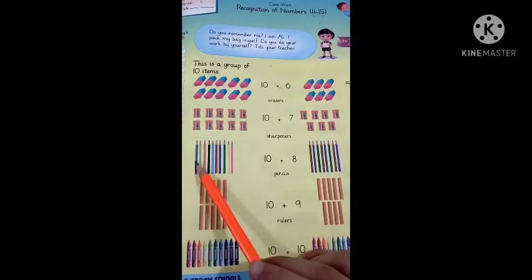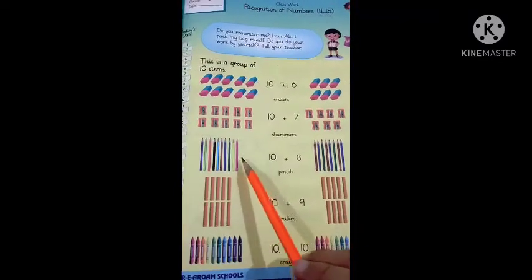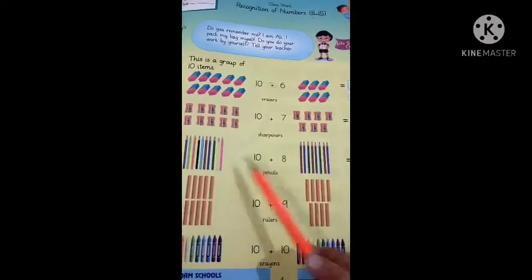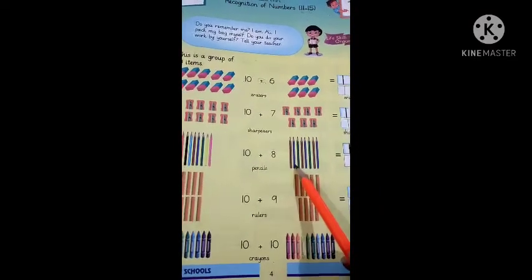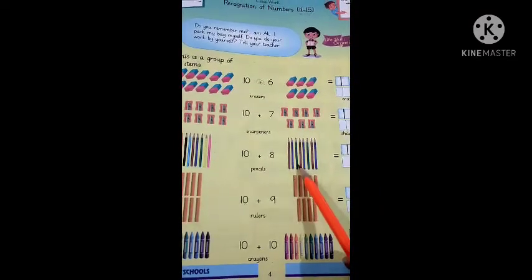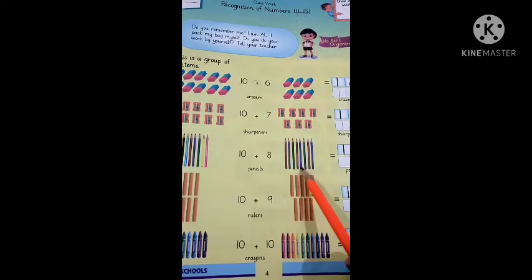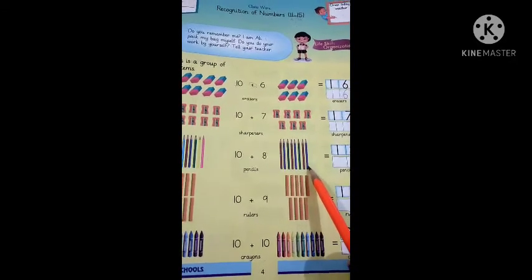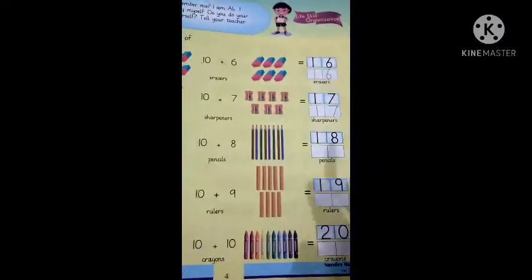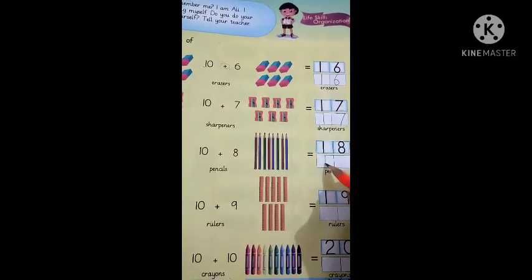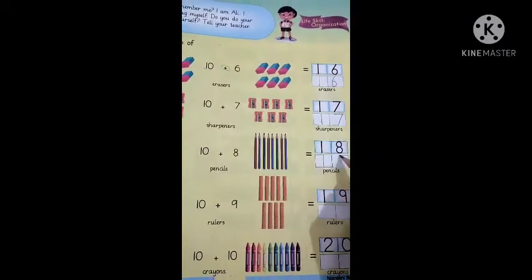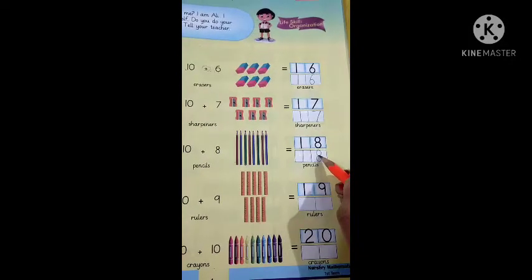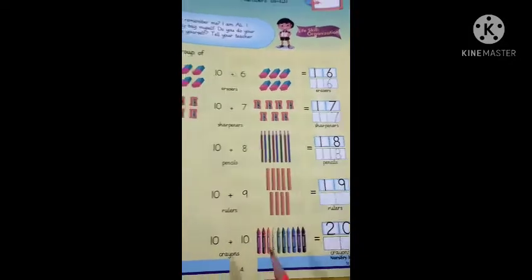Next, there are ten pencils. We will add eight more: eleven, twelve, thirteen, fourteen, fifteen, sixteen, seventeen, eighteen. How many pencils? One, eight — eighteen. First we make a small circle, then make one more small circle. Eighteen.